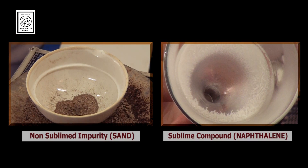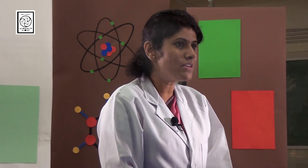Students, you can also see that sand is settled in the porcelain dish because it is non-sublime in nature. In this way, we can separate sublime compounds from non-sublime impurities. So, have you understood this process of sublimation? Yes, ma'am. But I would like to know, why do some substances convert directly from solid to gaseous state without undergoing liquid state?